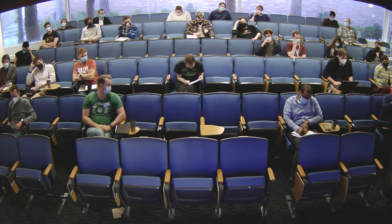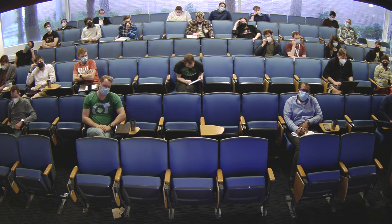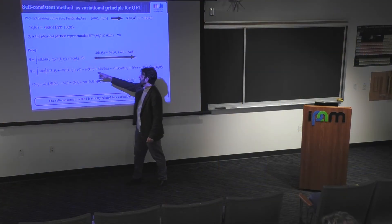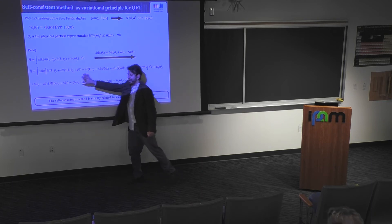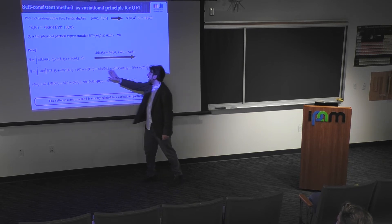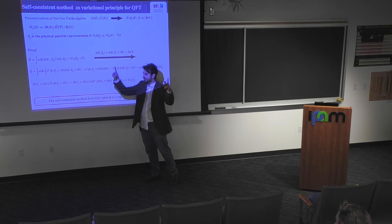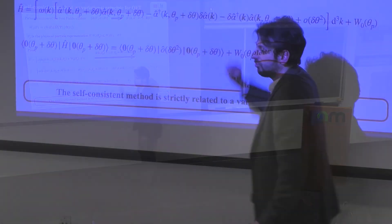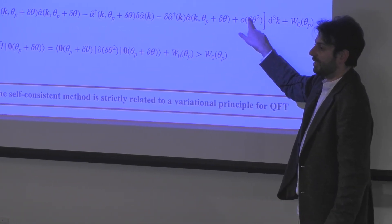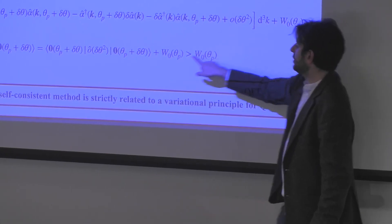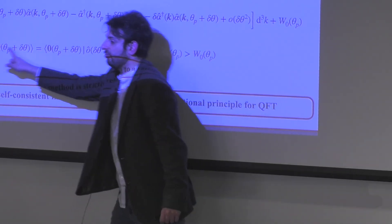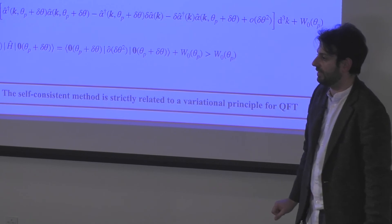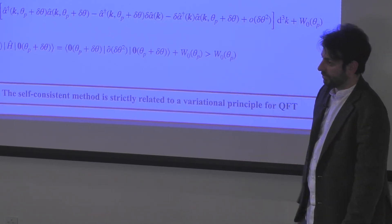The proof proceeds by taking the first-order development of the Hamiltonian with respect to the deformation parameter theta. The linear term vanishes because in the new ground state you cannot have only one creation or annihilation operator. The next term is definite positive, so the new ground state energy equals the old ground state energy plus the expectation value of a positive definite operator — proving the variational principle.